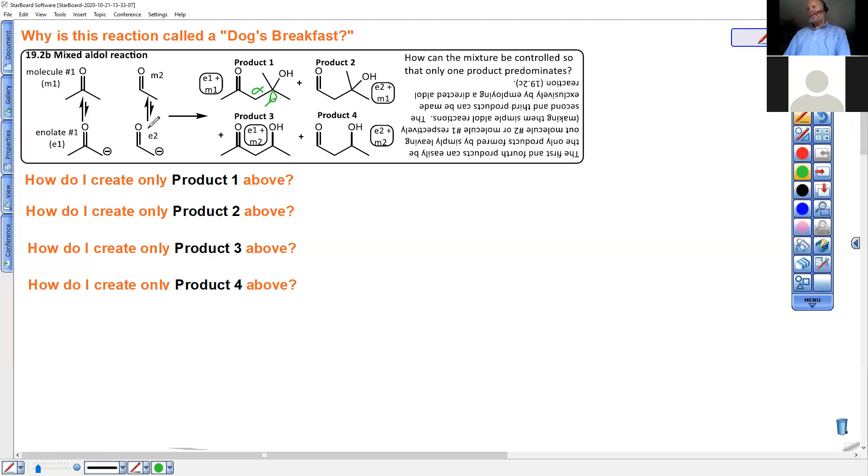The question here, how can I create only product one, is quite simple. Go back to Monday's lecture when we reacted only one carbonyl containing species. Then it created an enolate that reacted with itself, the unreacted carbonyl. And we got an aldol reaction with only one product. Product one, which results from the enolate of one, we can make that in very high yields by excluding molecule two, just don't have it there.